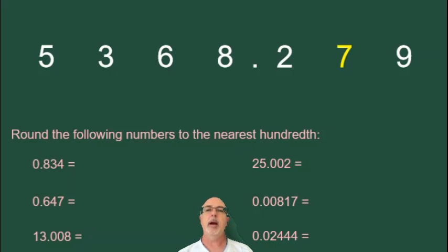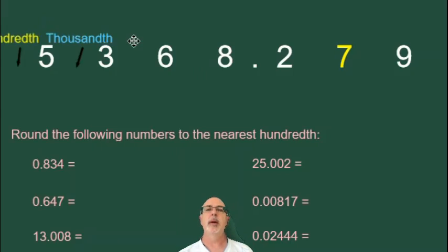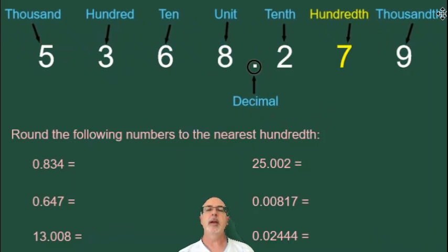This video is some extra practice on rounding numbers, specifically rounding to the nearest hundredth. To do that, we have to know where is the hundredth position in our number. In this large number that I'm using as an example, we can see the hundredth position is here. It is the second digit to the right of the decimal, and that's the digit that we focus our attention on while we round these numbers.